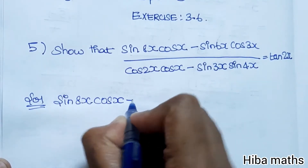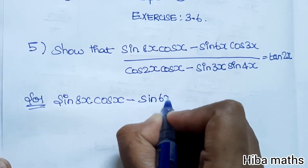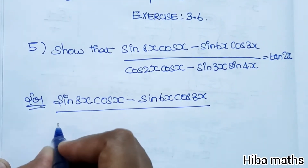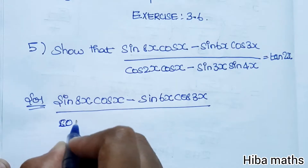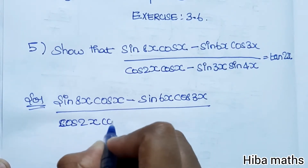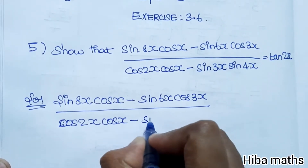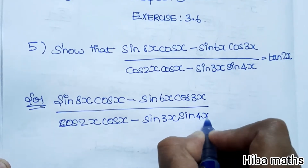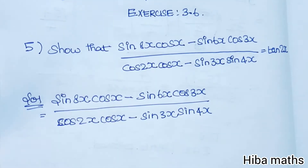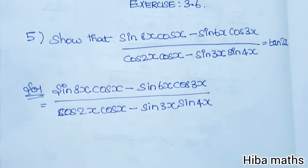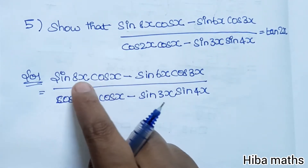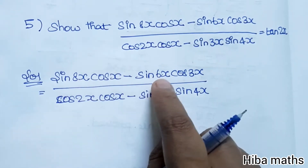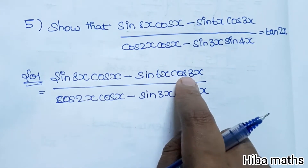The expression is: sin 8x cos x minus sin 6x cos 3x, divided by cos 2x cos x minus sin 3x sin 4x, which equals tan 2x. To solve this, the identity we can use is: sin A cos B = half into sin(A plus B) plus sin(A minus B).